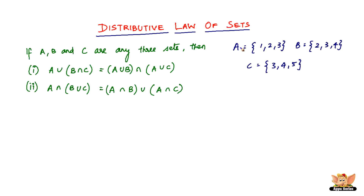Let there be three sets: A equals {1, 2, 3}, B equals {2, 3, 4}, and C equals {3, 4, 5}. Let's simply apply the law to these sets and see if it holds good.